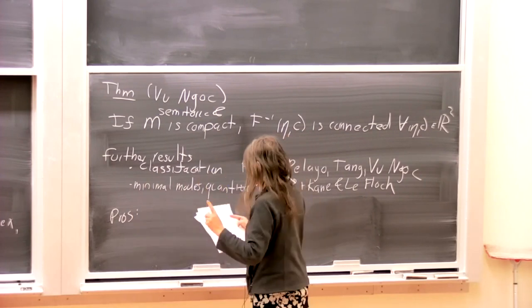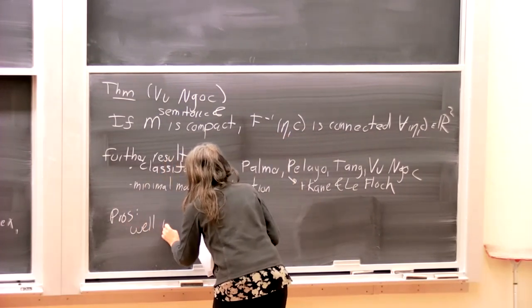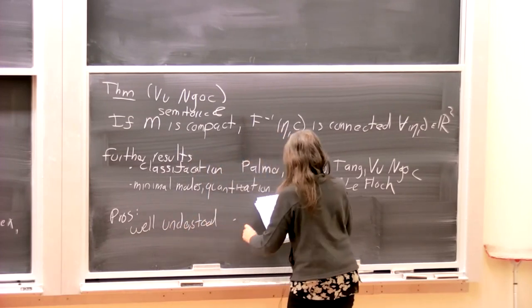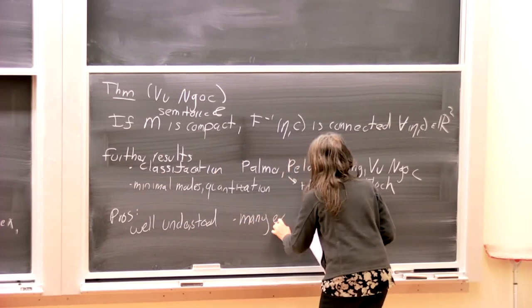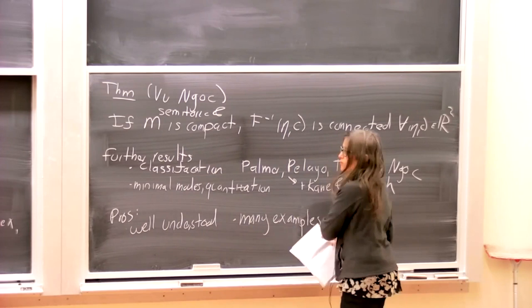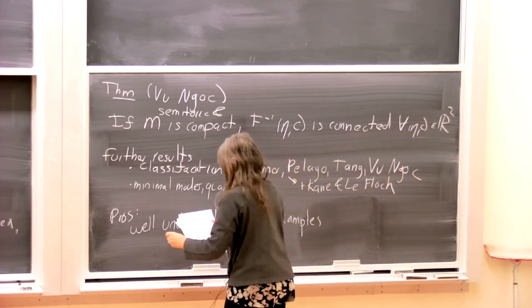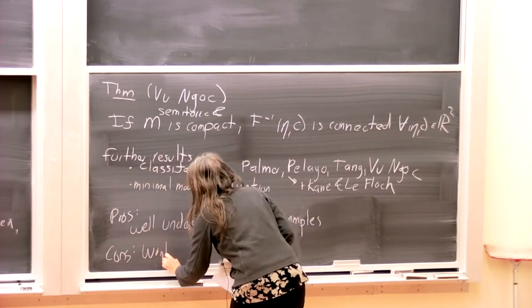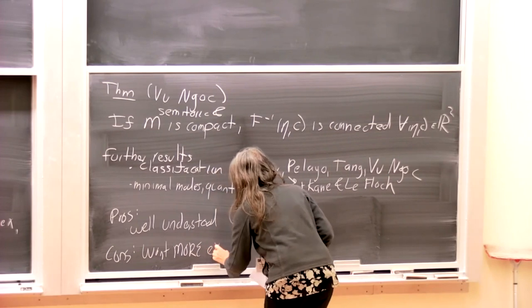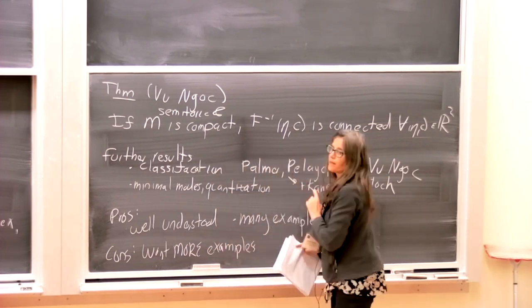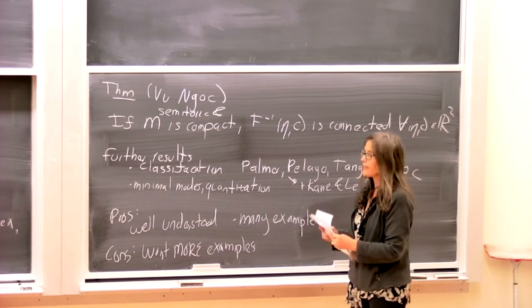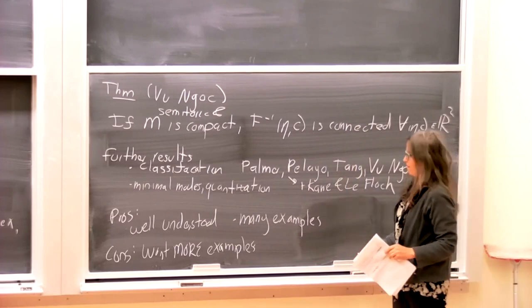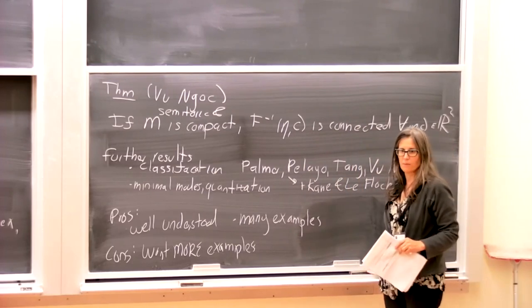So semitoric systems have two obvious pros. They're well understood. That's one. And there are many examples. That's two. Okay, that sounds great. What are the cons though? As mathematicians, we're always greedy. We want more examples. So that's what I'm going to talk about. Basically, in what universe can we extend this result? Is there any question? Because this is sort of the basic introduction.